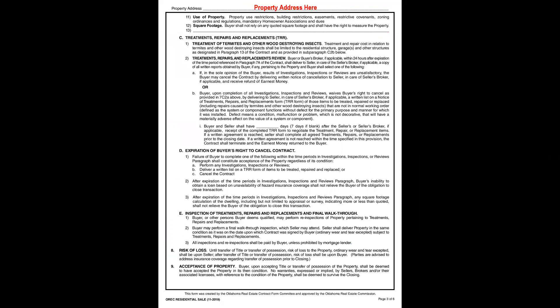Continuing on the next page — how the buyer intends to use the property is also inspectable. If they have concerns, make sure they review the covenants, codes, and restrictions during this time. If they want to build something or add a pool, contact the listing agent for the prior survey to see where easements are located. If exact square footage is important, have it measured during the inspection period.